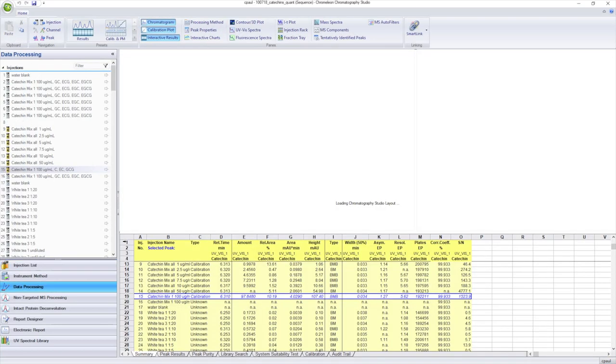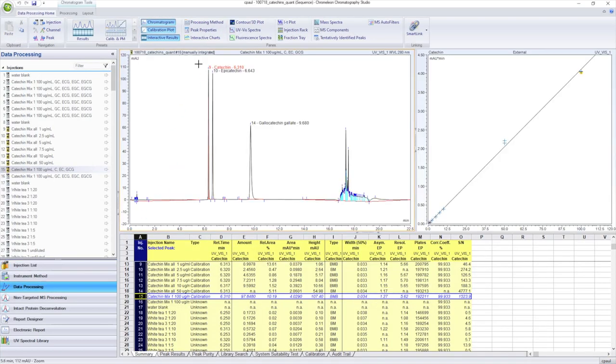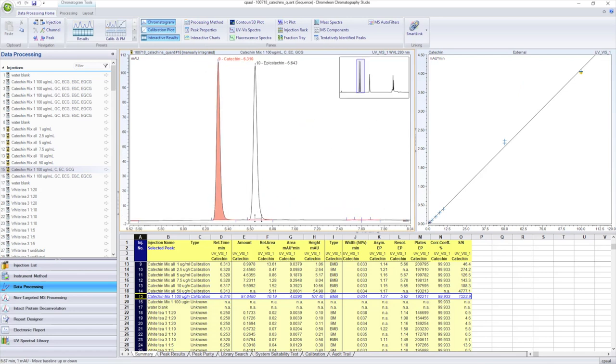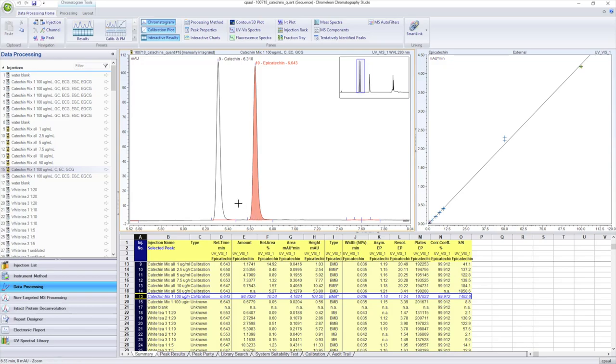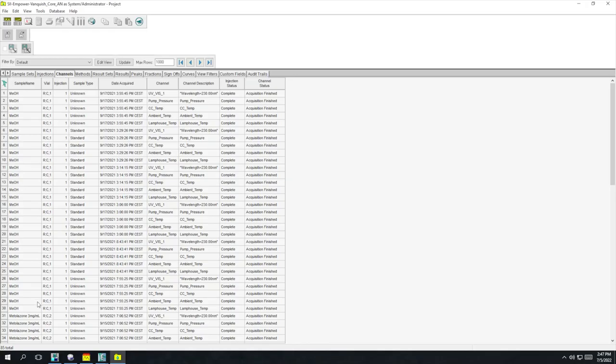The Thermoscientific Chromelion Chromatography Data System software provides Vanquish system users with the most advanced and intuitive software available for instrument control, 21 CFR Part 11 compliant data handling, and effective reporting.